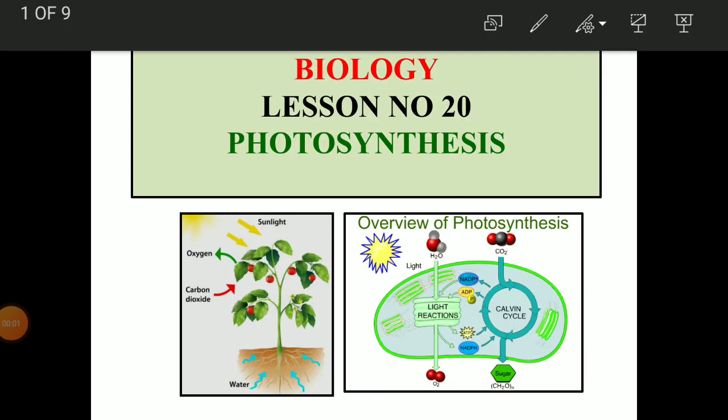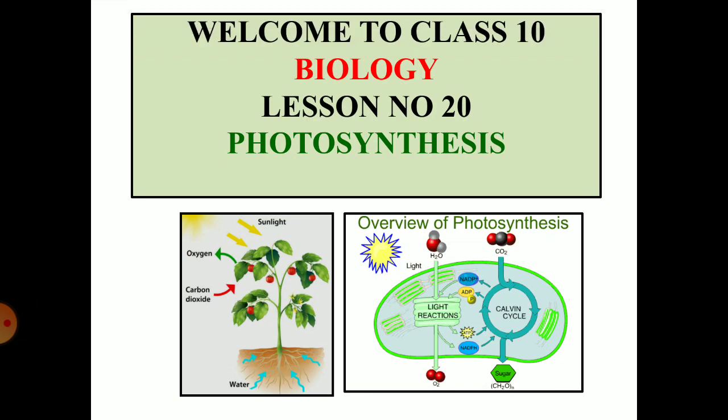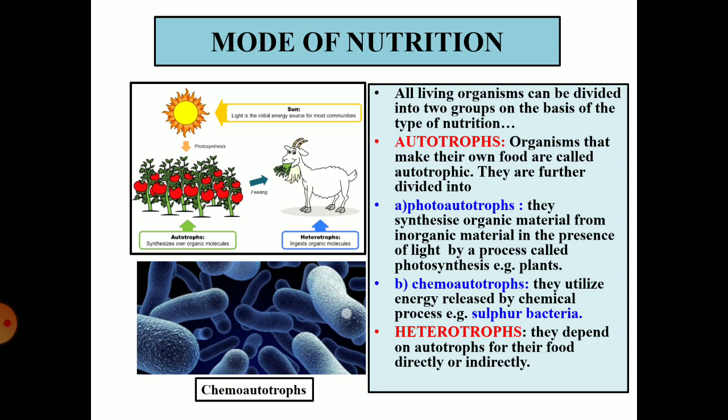Good morning students. Welcome to class 10 biology lesson number 20. We all know that nutrition is an important characteristic of all living organisms, and depending upon the type of nutrition that the organisms take, we can broadly divide them into two categories: first, autotrophs, and the second is heterotrophs.